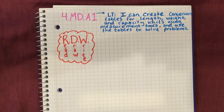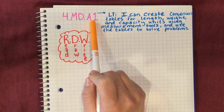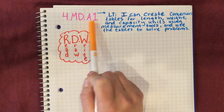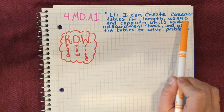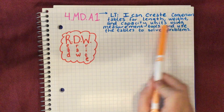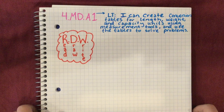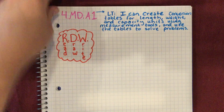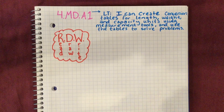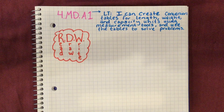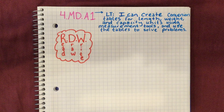Hi friends, Dr. Lewis here. Today we are going to work on meeting this standard, which is the fourth grade measurement and data. It's the first one of that cluster of standards — A1 — and it's all about meeting this target. The target says: I can create conversion tables for length, weight, and capacity units using measurement tools and use the tables to solve problems. This target might not seem super familiar, but the content we're going to be covering today is incredibly familiar. We've been working on creating ratio tables or conversion tables pretty much all year, and we've already been working on length, weight, and capacity. The coolest thing about meeting this target is that we get to combine a lot of different things we've learned throughout the year into one.